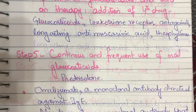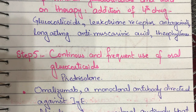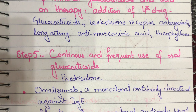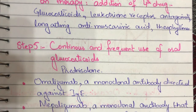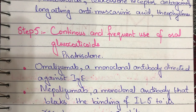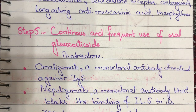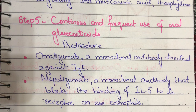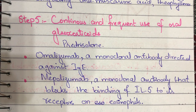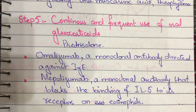If the patient is not improving after Step 5, we use monoclonal antibodies. We use omalizumab, a monoclonal antibody directed against immunoglobulin E. We can also use mepolizumab, a monoclonal antibody directed against interleukin-5. It binds to receptors on eosinophils, thereby inhibiting the production and rupturing of eosinophils, which would otherwise lead to further airway narrowing, mucus secretion, and smooth muscle spasm.